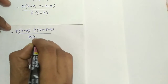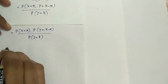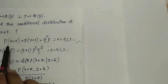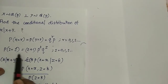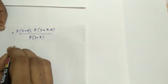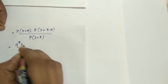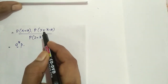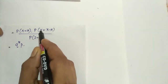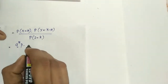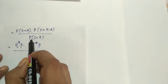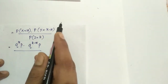Since probability X equal to r equals q raised to r times p, we write: probability X equal to x equals q raised to x times p. Probability Y equal to k minus x equals q raised to (k minus x) times p. Divided by probability Z equal to k, which is (k plus 1) times p squared times q to the power k.